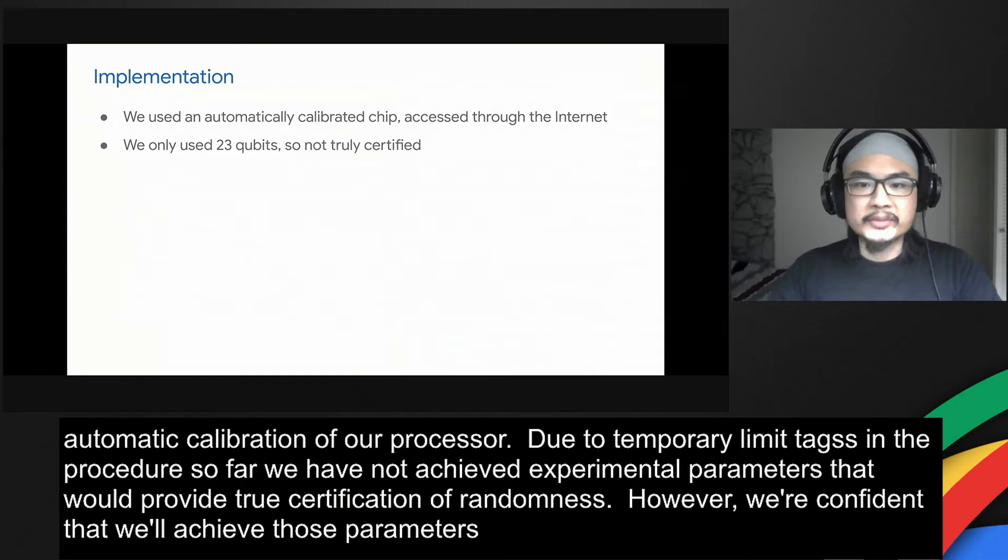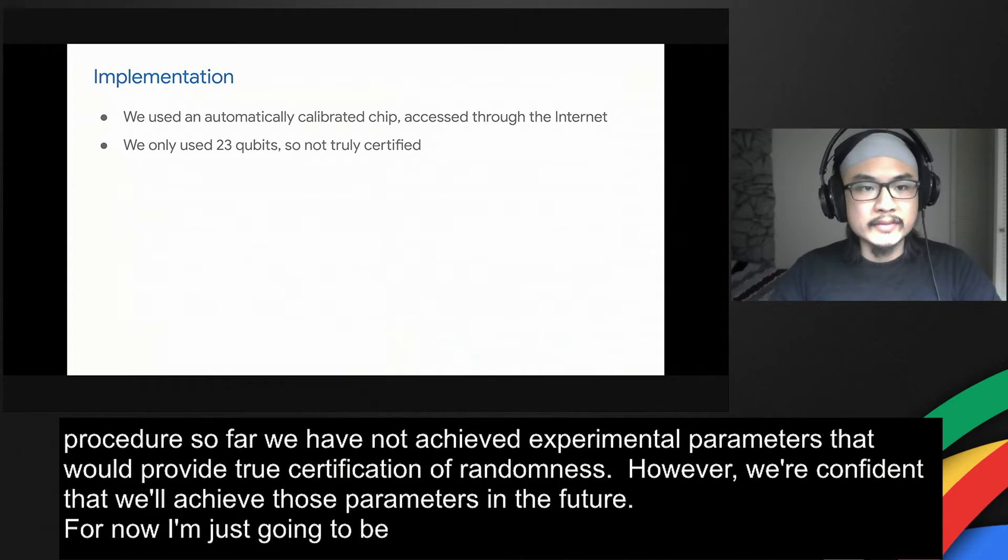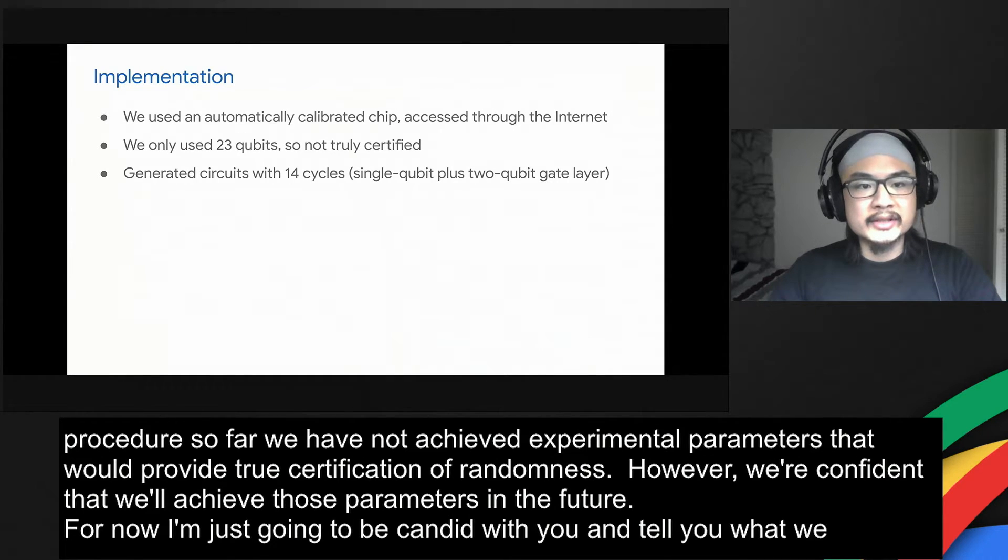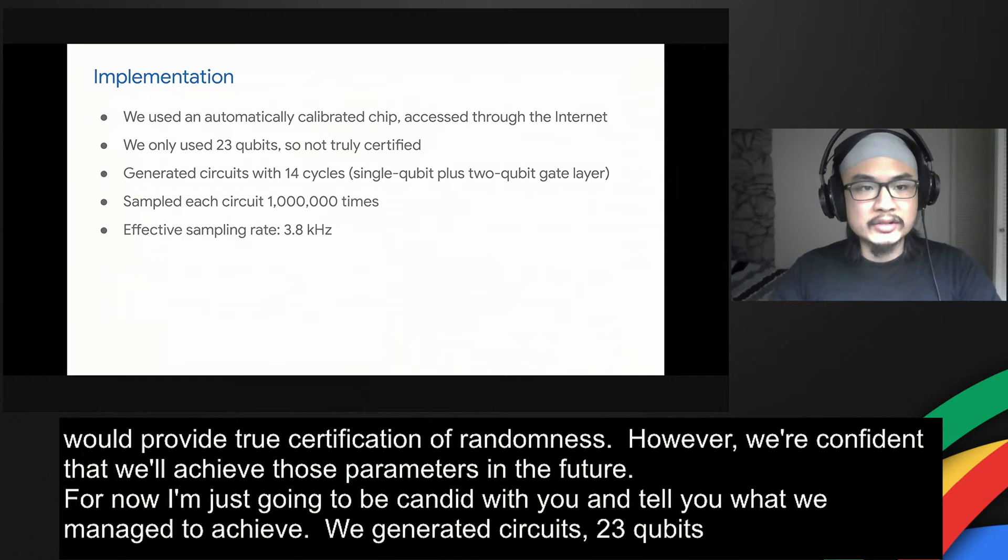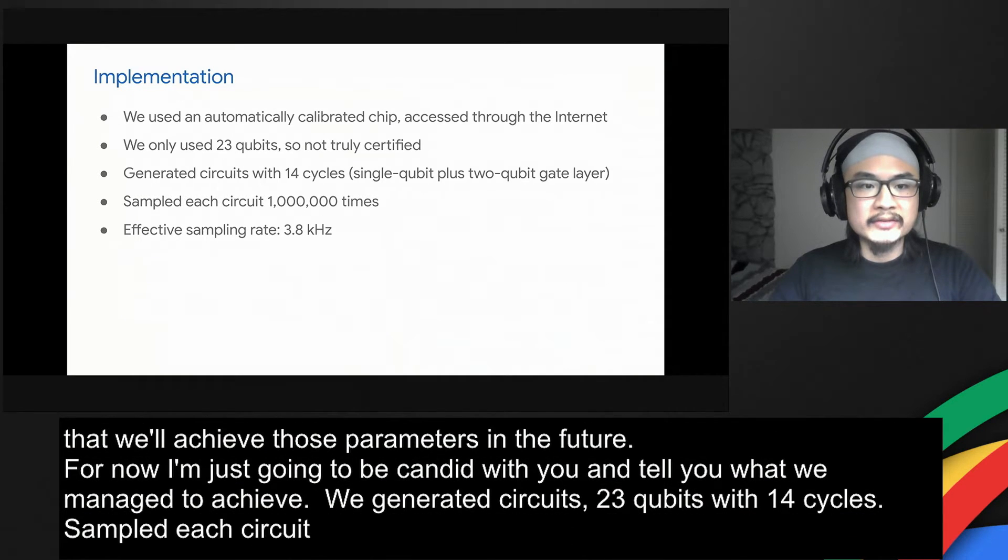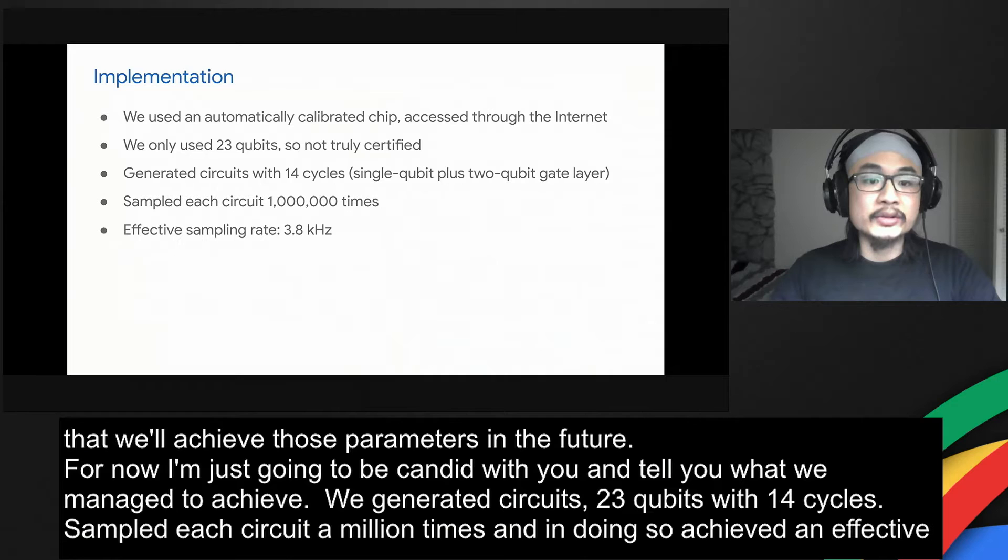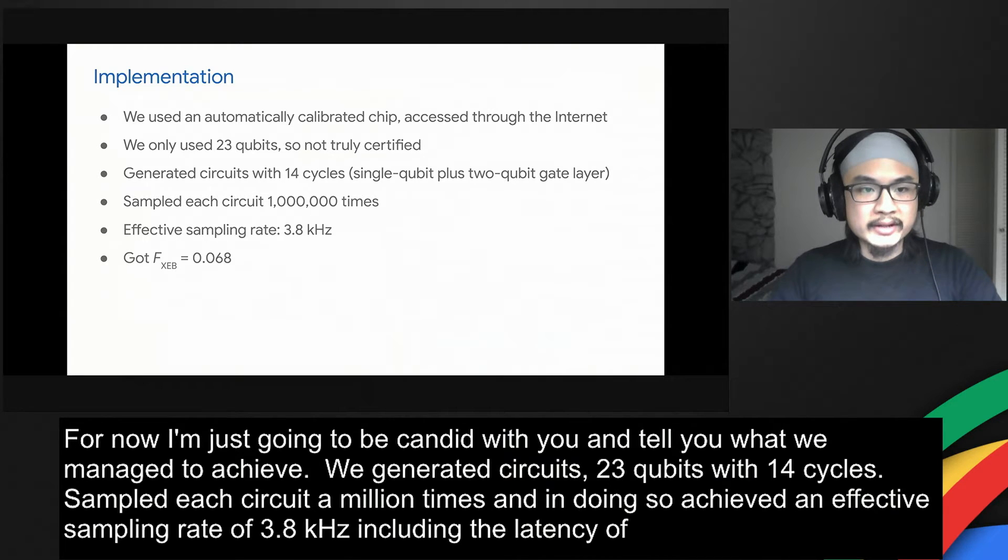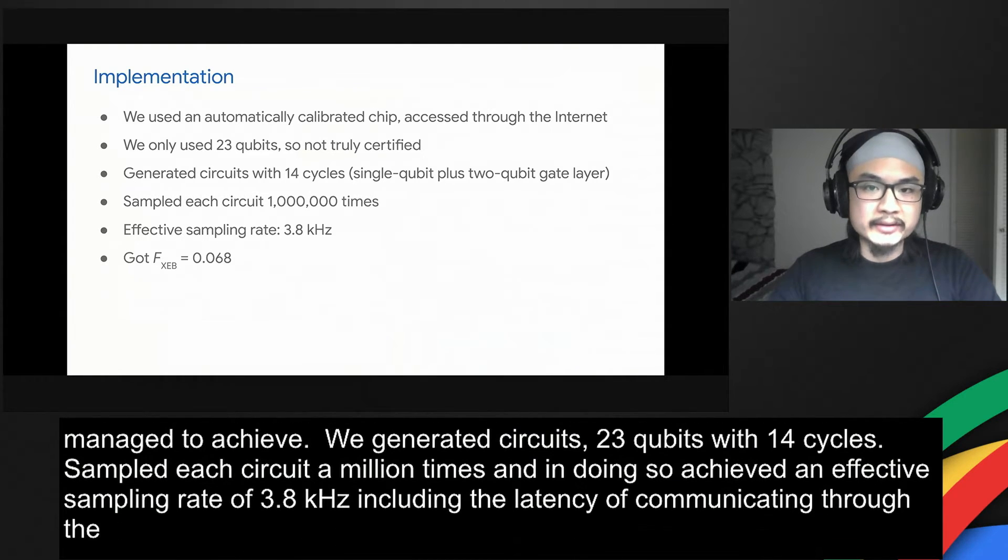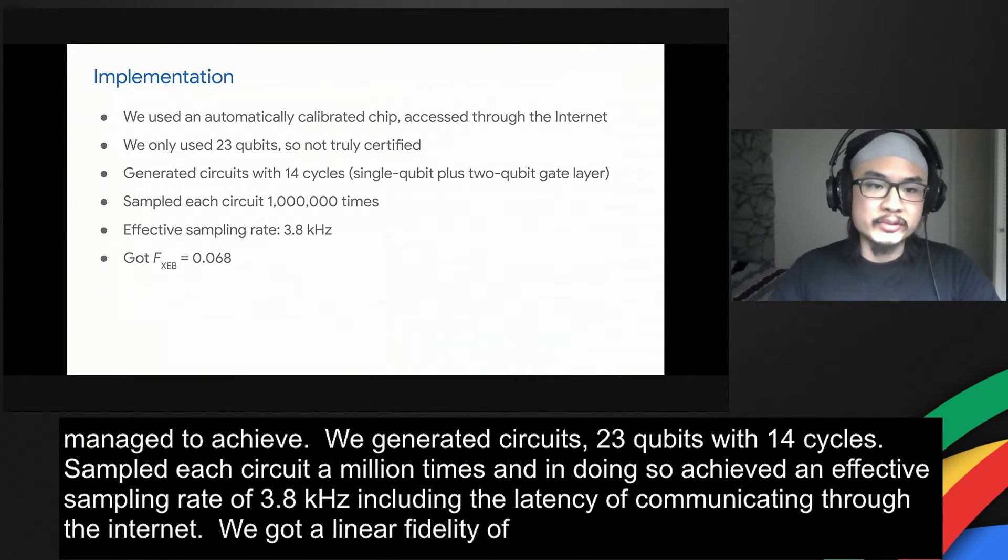For now, I'm just going to be candid with you and tell you what we did manage to achieve. We generated circuits on 23 qubits with 14 cycles. We sampled each circuit a million times. And in doing so, we achieved an effective sampling rate of 3.8 kilohertz. This includes the latency of communicating through the internet. We got a linear cross-entropy fidelity of 6.8%. Now, this isn't as good as what we can achieve with manual calibration, but it will improve.